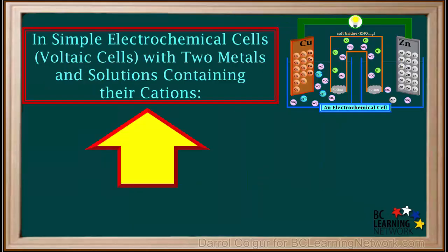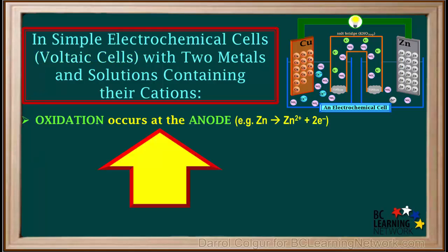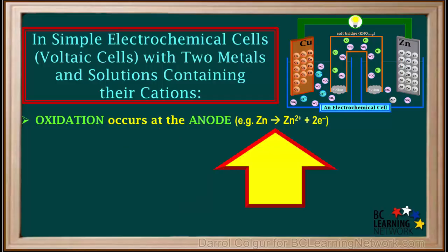Here we will summarize the main things you need to remember about electrochemical cells containing two metals, and solutions containing their cations. Electrochemical cells are also known as voltaic cells. You may see this term in some textbooks. Oxidation always occurs at the anode. One way to remember this is oxidation and anode both start with vowels. For example, in the cell we've shown here, zinc metal atoms are oxidized to zinc ions.